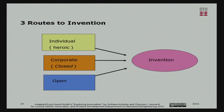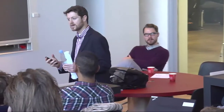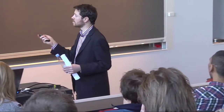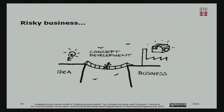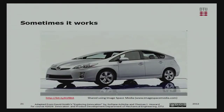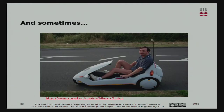There are essentially three routes to invention: the lone heroic version or small groups, which is what you'll be doing; the corporate route, usually closed behind intellectual property; or the open version, where you release it to society and let people contribute to your projects. It's a risky business. Sometimes it works — the Prius — and sometimes it doesn't — the Sinclair C5.